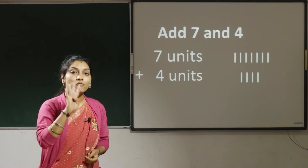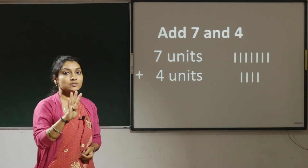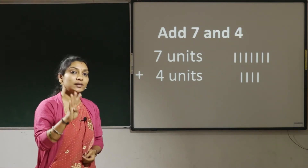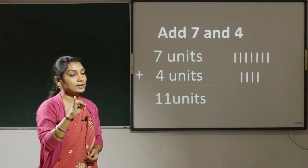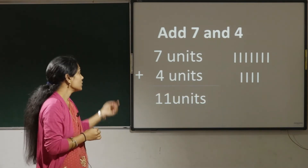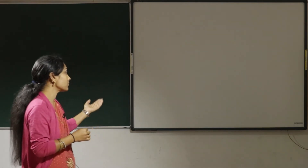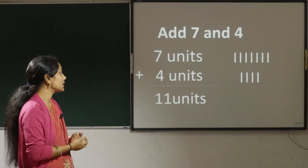7 in the mind, 4 in the hand. After 7: 8, 9, 10, 11. So 7 plus 4 is 11.